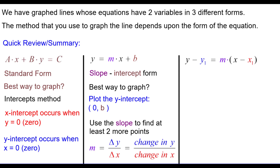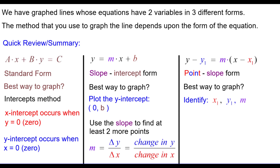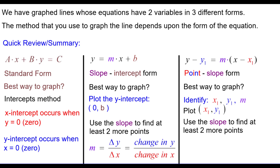The third form: y minus y-sub-1 equals m times the quantity x minus x-sub-1. This is called point-slope form. The best way to graph: identify those three parameters — x-sub-1, y-sub-1, and m. Plot the point (x-sub-1, y-sub-1) and then use the slope to find at least two more points. Again, the slope is the change in y over the change in x.